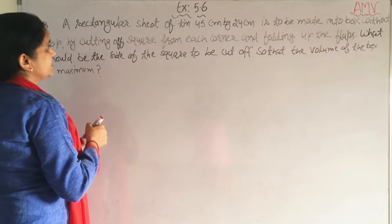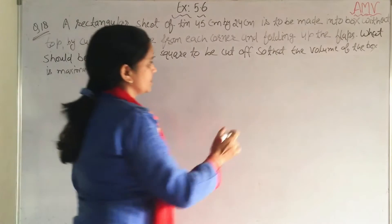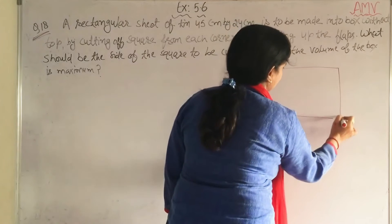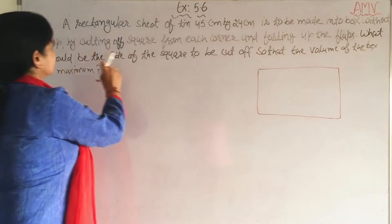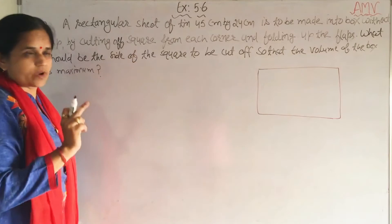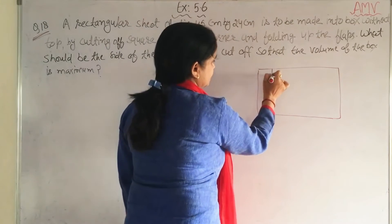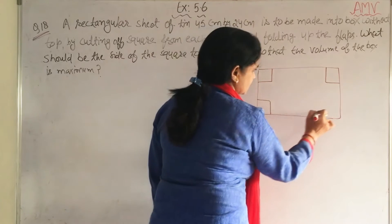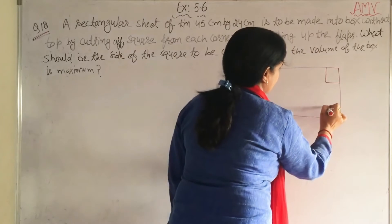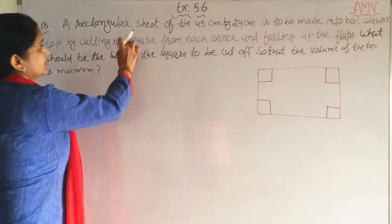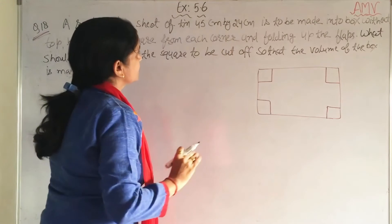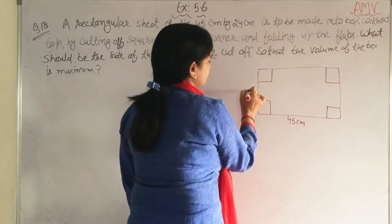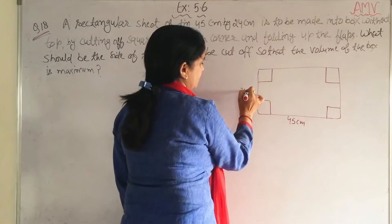First, try to understand with this figure. There is a rectangular sheet, and we cut off a square from each corner — one corner, another, third, and fourth. Then we fold to make a box. The length given is 45 cm and the breadth is 24 cm.